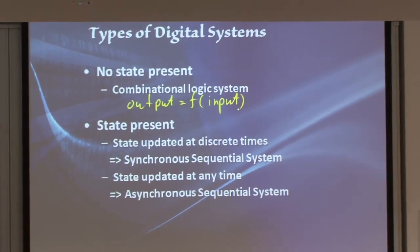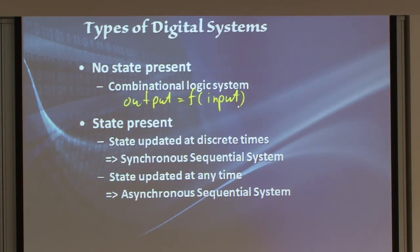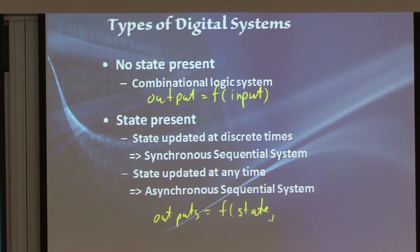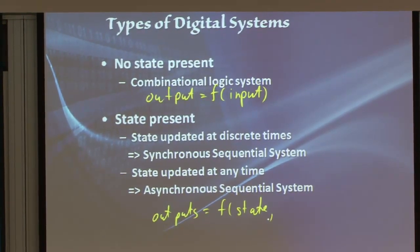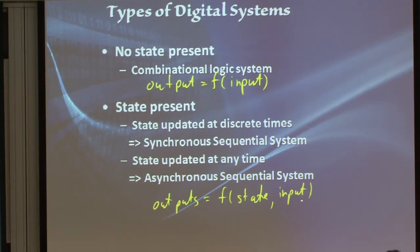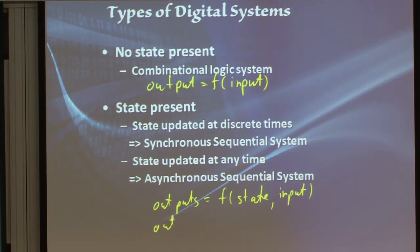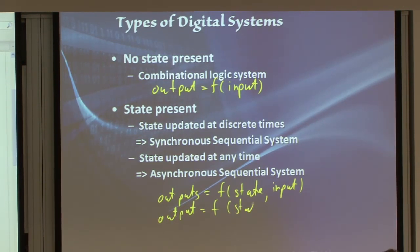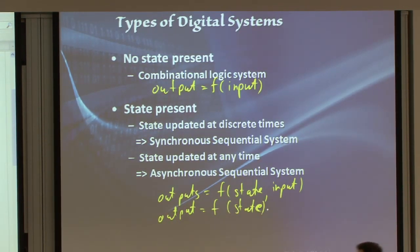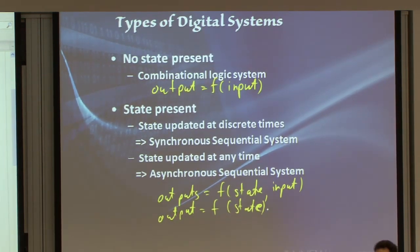In contrast to that, there are digital systems that do have states, that do have memory elements in them — they remember what happened before. The outputs could be functions of the current state of the system, which remembers what happened before, and the current inputs. It could also be a function solely based on the state while ignoring the current inputs. The inputs will affect what the current state is, and then the output will only depend on the current state — so indirectly it depends on the input as well.